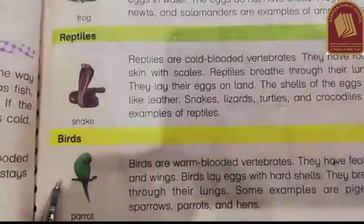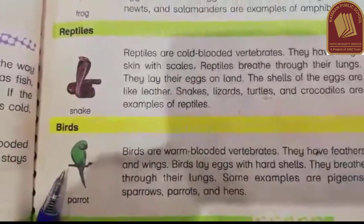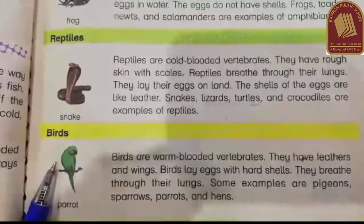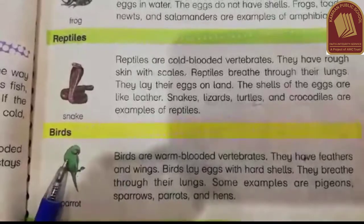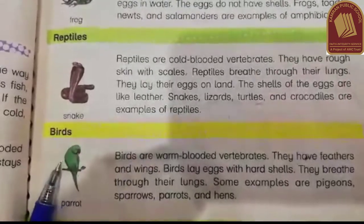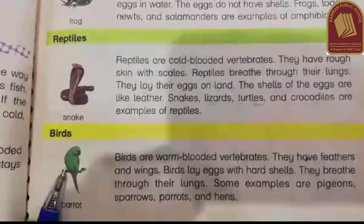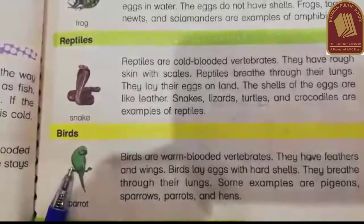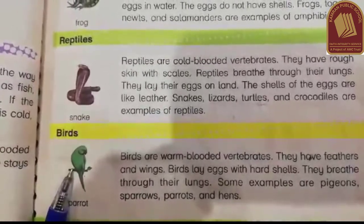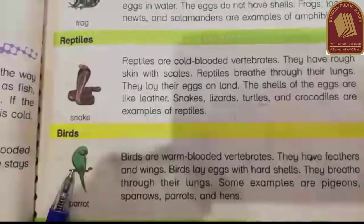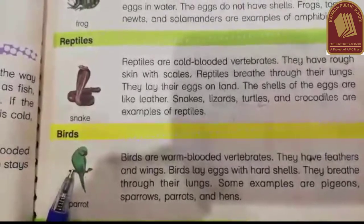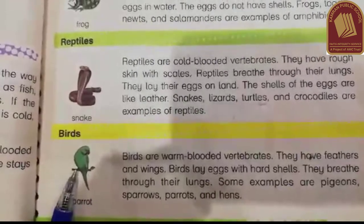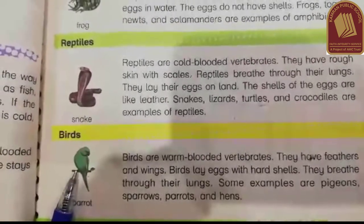Birds are warm-blooded vertebrates, meaning their body temperature does not change with the environment. They have feathers and wings. They lay eggs with hard shells and breathe through lungs. Examples include pigeons, sparrows, parrots, and hens.